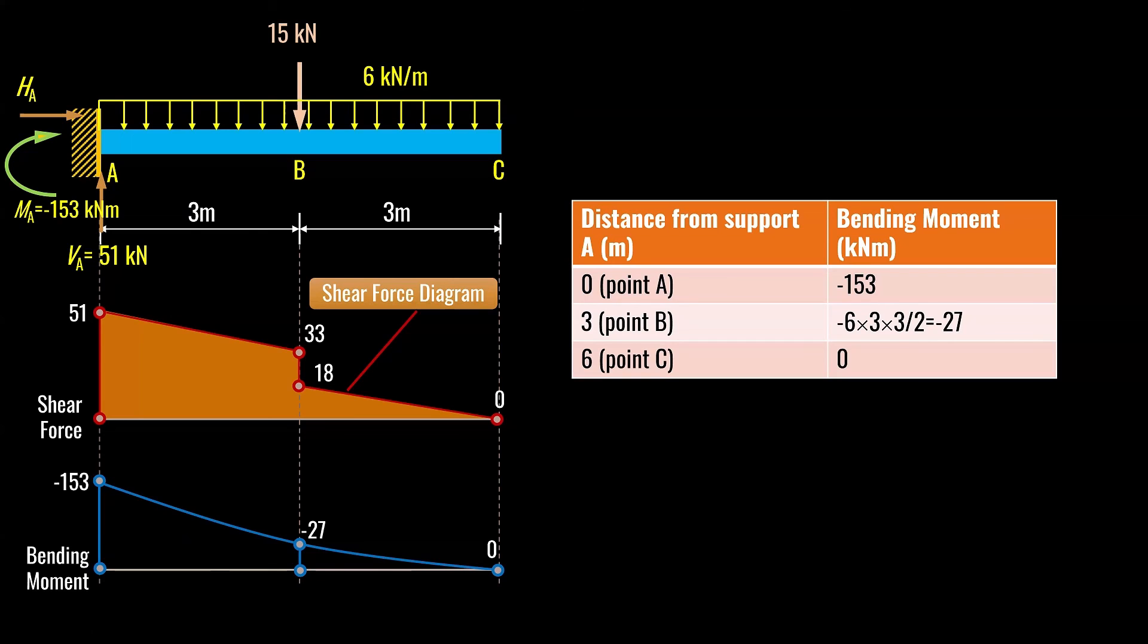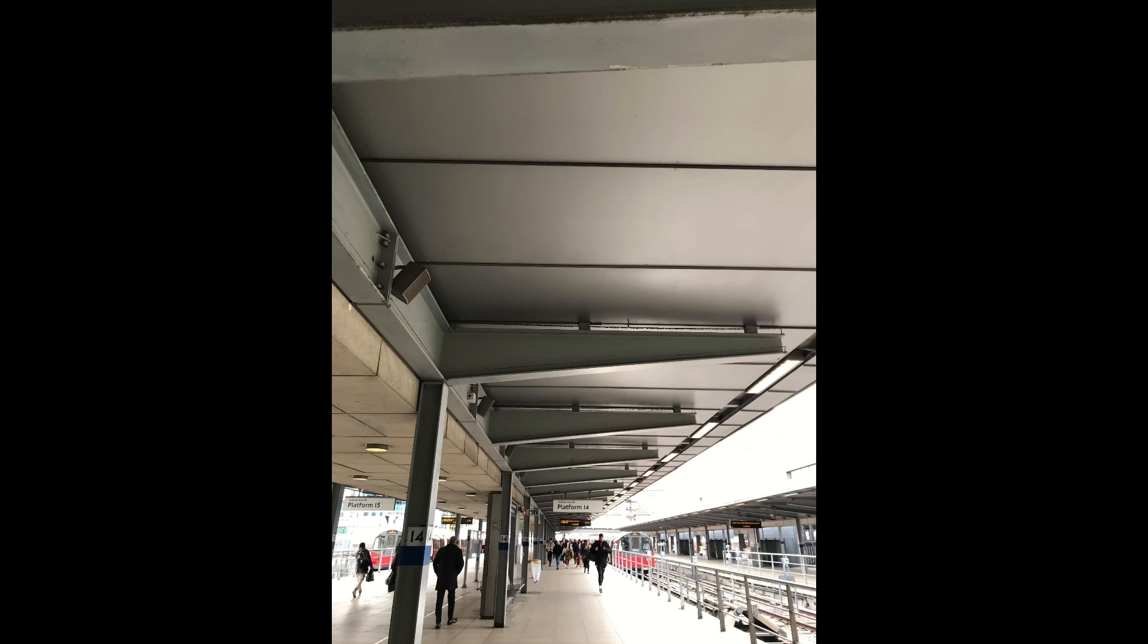Finding out bending moment diagram is extremely important. This tells us where do we provide more materials. In cantilever beams, the maximum bending moment is at the fixed end. Which means that the section is going to be thicker at fixed end. And at point C, at free end, you don't have any bending moment at all. This means there should be lesser material. The depth of the section should be less.